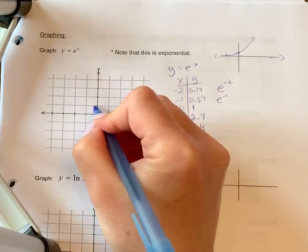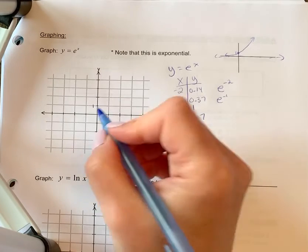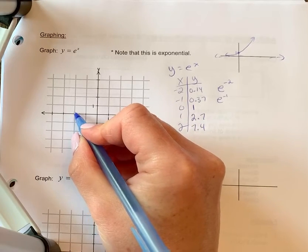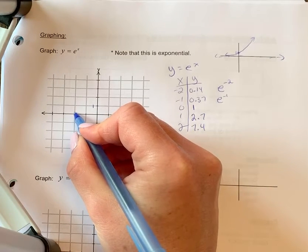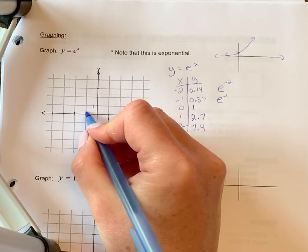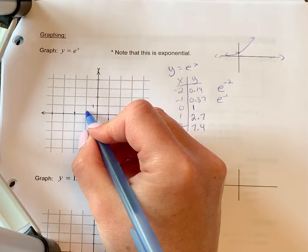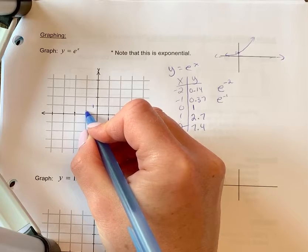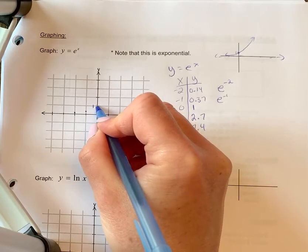So I need to scale. Negative 2 and 0.14. So we're just estimating. That's really close to the asymptote. Negative 1 and 0.37. So that's close to a third because that's what 0.33 would be. 0, 1.